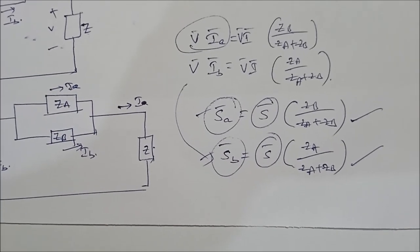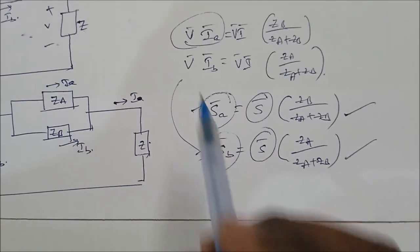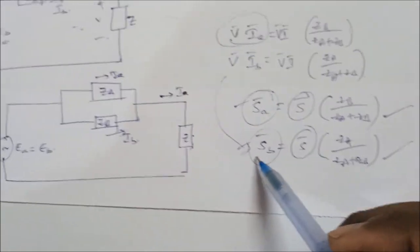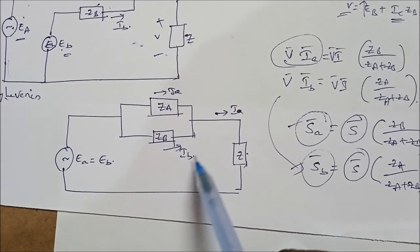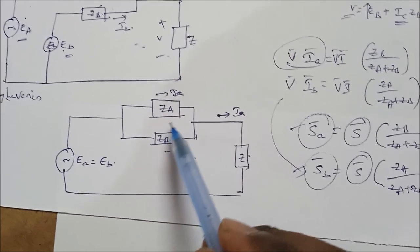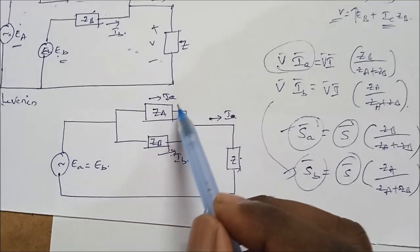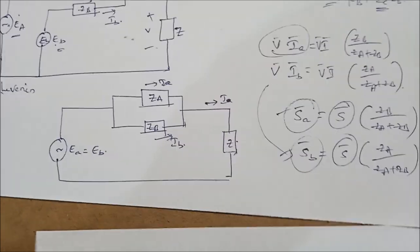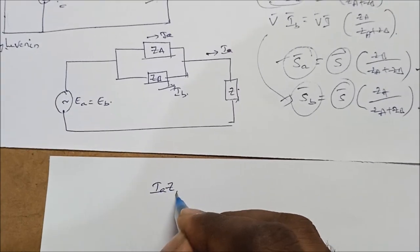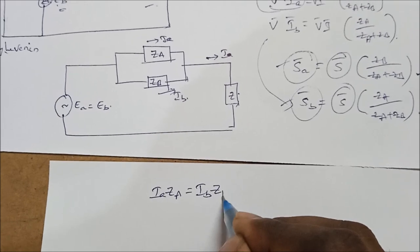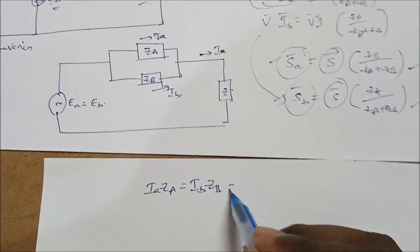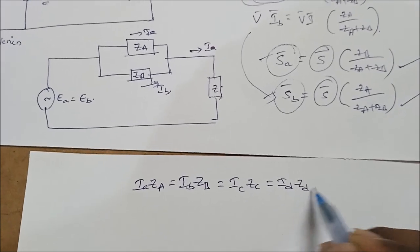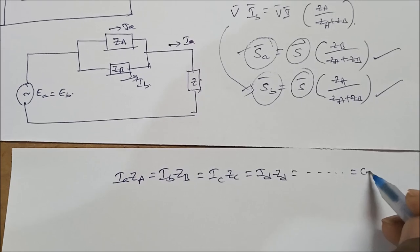Let us continue the parallel operation of transformers. In the last video we derived the equations for Sa and Sb — the load shared by transformer A and transformer B. In the equivalent circuit, Za and Zb are in parallel, so the voltage across Za equals the voltage across Zb. Therefore: Ia·Za = Ib·Zb. If more transformers are present, Ic·Zc = Id·Zd, and all are equal to some constant.